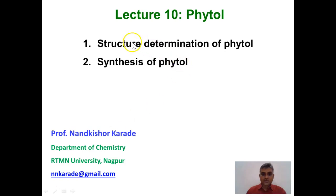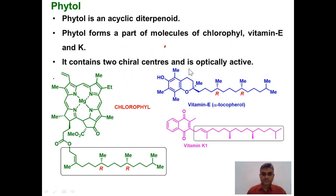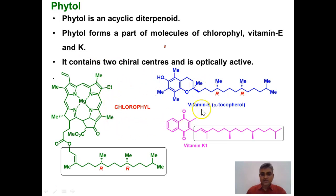In this lecture we are going to discuss the structure of phytol on the basis of chemical methods of analysis. Then we will discuss the synthesis of phytol from farnesol. Phytol is an acyclic diterpenoid, meaning there are four isoprene units joined through head-to-tail linkage. Phytol is found to be a substructural unit of various biologically active molecules like chlorophyll, vitamin E, and vitamin K1.